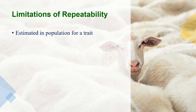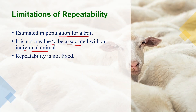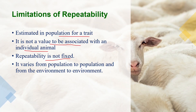The limitations of repeatability are: first, it is always estimated in a population and for a particular trait. Second, it is not a value to be associated with an individual animal. Third, repeatability is not a fixed value — it is affected by permanent and temporary environmental variance, so it varies from population to population, herd to herd, and environment to environment.